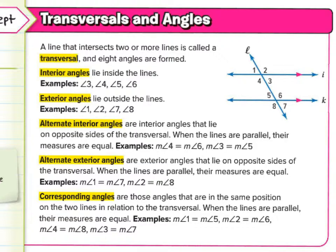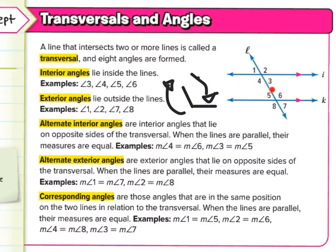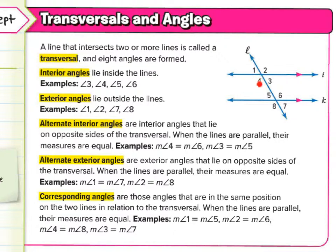I'll draw it for you. Angle six goes straight and then on an angle. If you take that and flip it around, spin it, it would fit right onto angle four. Alternate interior angles are interior angles that lie on opposite sides of the transversal. When the lines are parallel, their measures are equal — for example, measure of angle four equals measure of angle six.